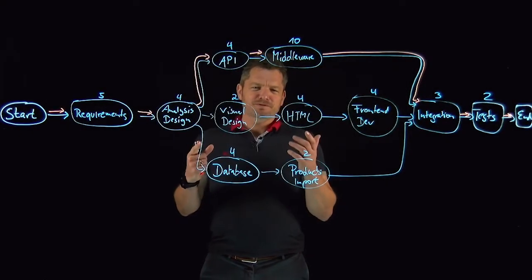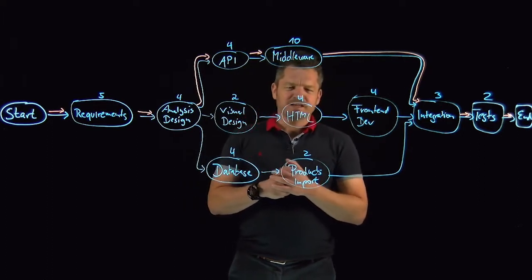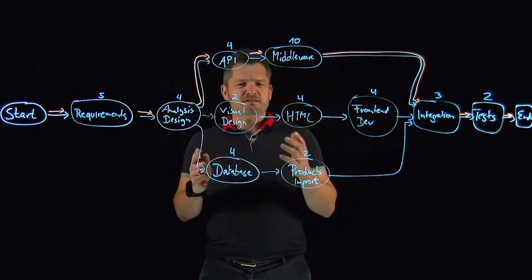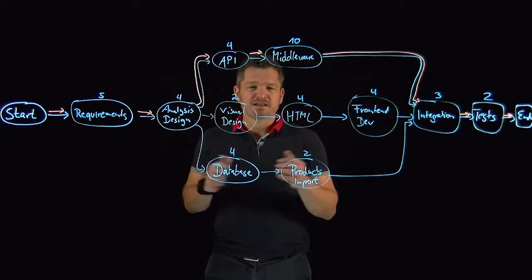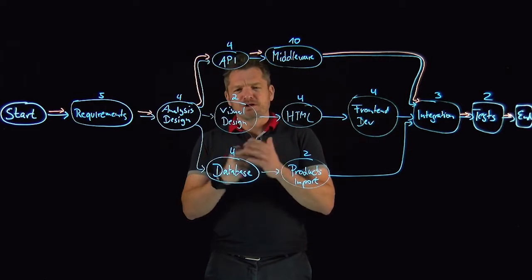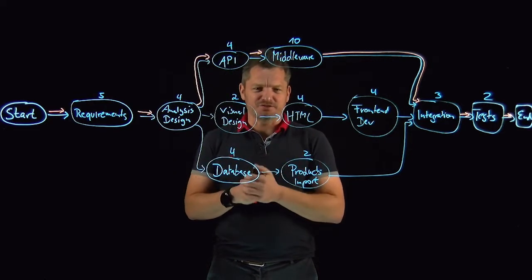Now to determine the earliest and the latest each activity can start and the earliest and the latest each activity can end, you need to do a forward, so-called forward pass calculation.